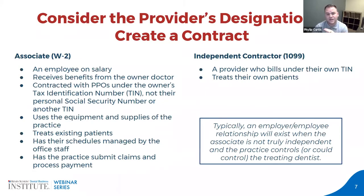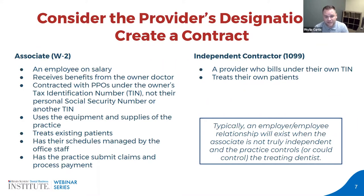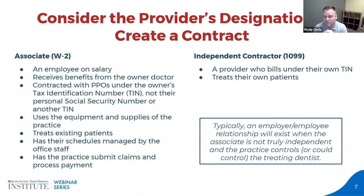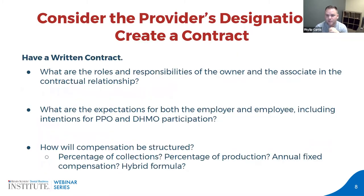A W-2 employee is on salary, receives benefits from the owner doctor, is contracted with PPOs under the owner's tax ID number, uses the equipment and supplies of your practice, treats your existing patients, has schedules managed by office staff, and has the practice submit claims on their behalf. An independent contractor, by contrast, bills under their own tax ID number, treats their own patients, and ideally exclusively uses their own equipment and services within the practice.